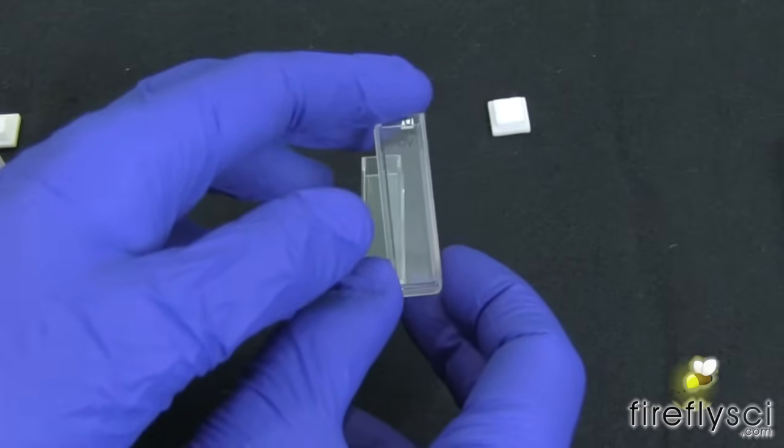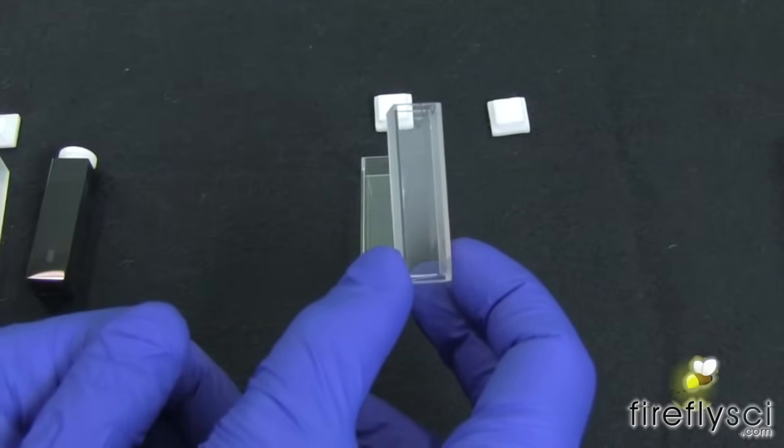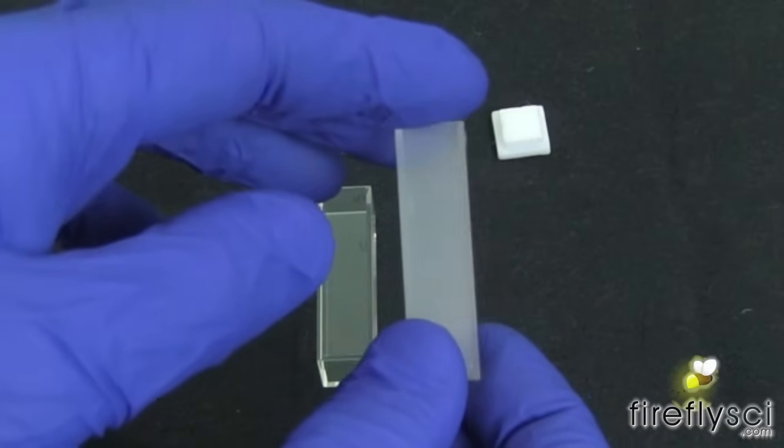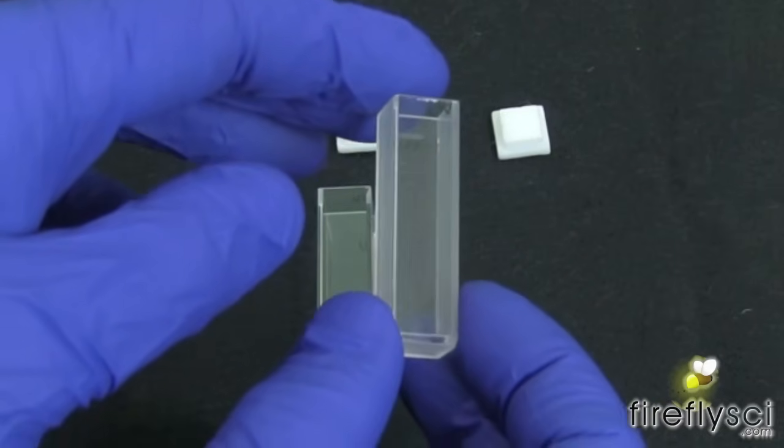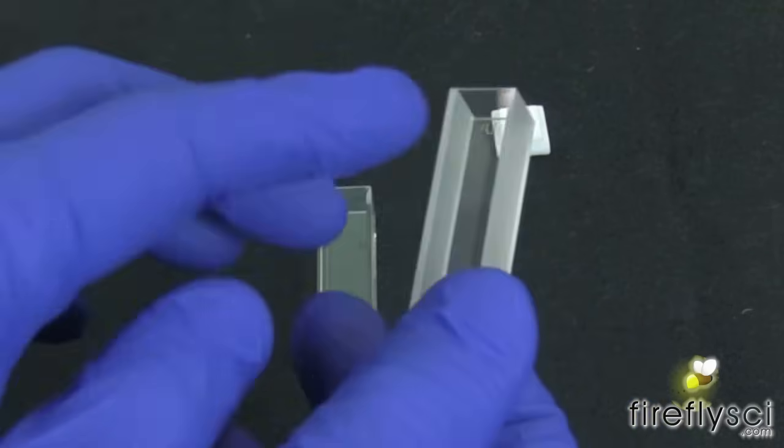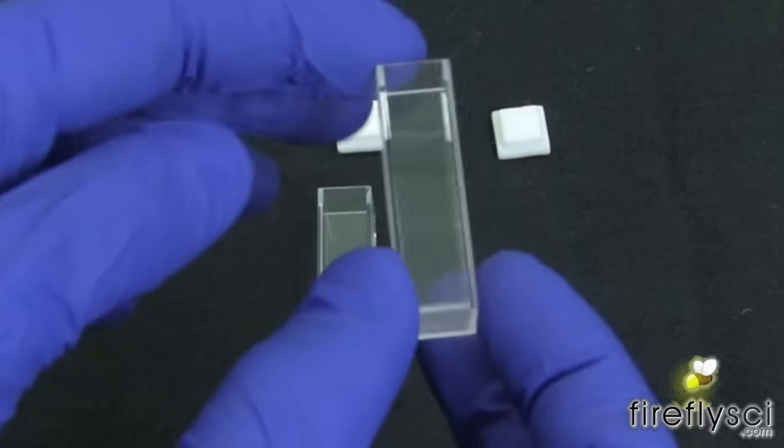This here is a basic 10mm spectrophotometer cuvette. We call this one type 1. What makes this a spectrophotometer cuvette is that it has two sides frosted and two sides polished. So there's one polished side here and one polished here and one frosted and one frosted over there.